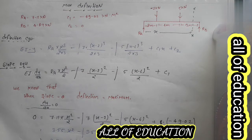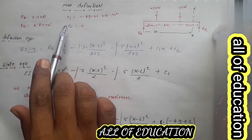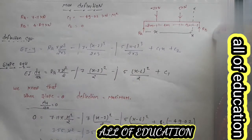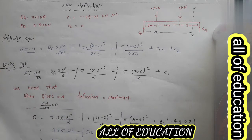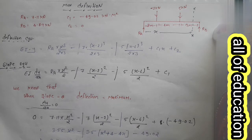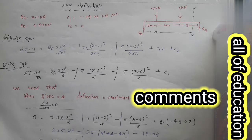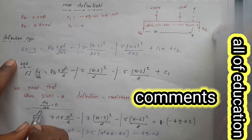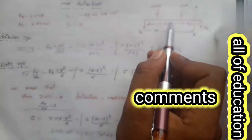अब हम maximum deflection की बात करते हैं। पिछली video के data - RA, RB, C1, C2 की value, deflection equation और slope equation लिखे हैं। हम जानते हैं कि जहां पर slope 0 होता है वहां पर deflection की value maximum होती है और जहां पर deflection maximum होता है वहां slope 0 होती है।